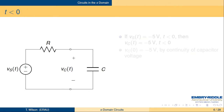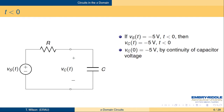For T less than zero, we're going to use the property that when the input is constant, the capacitor acts like an open, and we can find the voltage that way. If VS of T has been minus 5 volts forever, then there's no current flowing, the capacitor acts like an open, no current, no voltage across the resistor, so the voltage across the capacitor is the same as the voltage across the source. VS is minus 5 volts, then VC is minus 5 volts up until T equals zero. At T equals zero, by continuity of the capacitor voltage, the voltage still has to be minus 5 volts. Capacitor voltage doesn't jump around, even when inputs jump around.